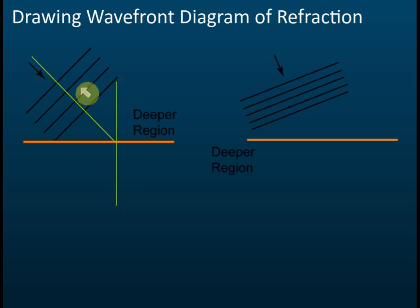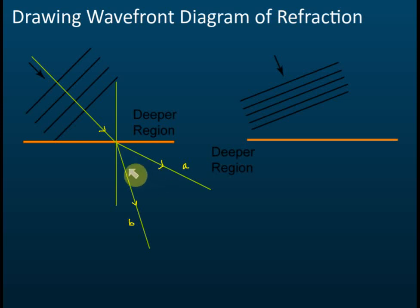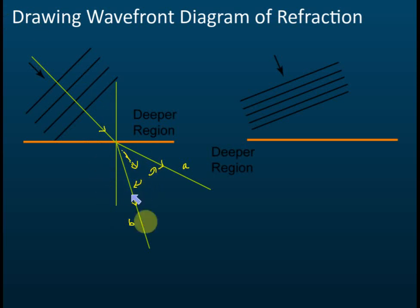This is from deeper to shallower regions. So what is the direction after refraction? I've given you two options: A and B. From deeper to shallower regions, the wave will be refracted — is it B or A? The answer is B. From deeper to shallower regions, the wave is refracted closer to the normal. This is the initial direction; B is closer to the normal, and A is away from the normal.